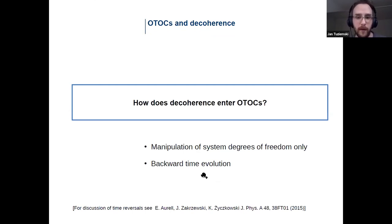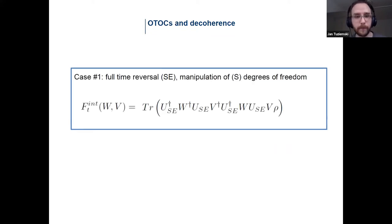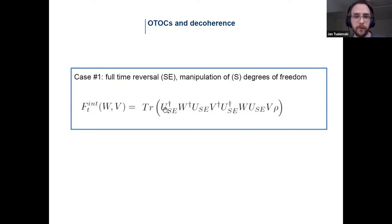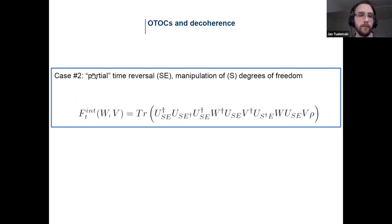Maybe I'm not able to reverse the evolution of the environment. I'm going to discuss those two cases separately. In the first case, I assume I'm able to do this full backward time evolution and only able to control and measure system degrees of freedom. Then the expression for your OTOC is very similar to the closed-system one — the only difference is that you need to enter the initial density matrix of the system and the environment, and the evolution is the joint evolution of system and environment.